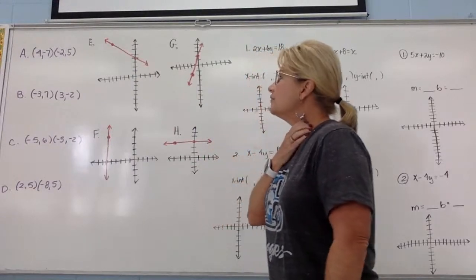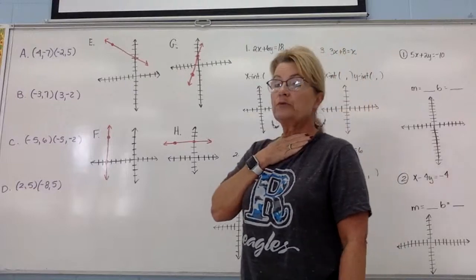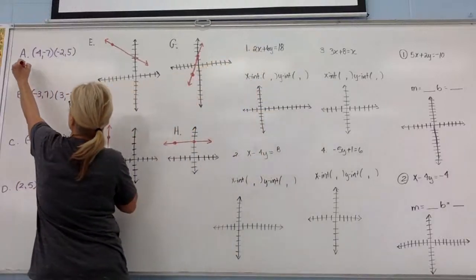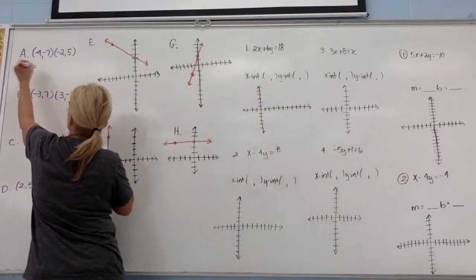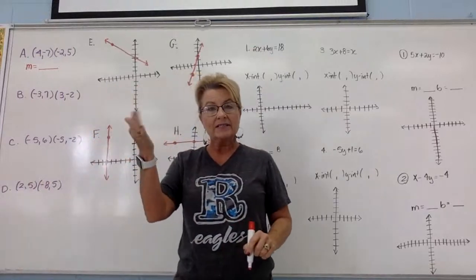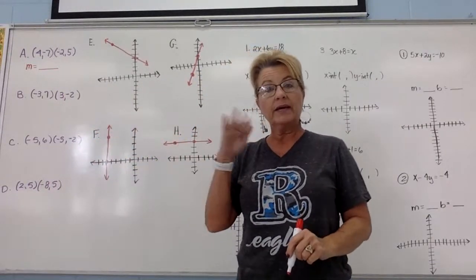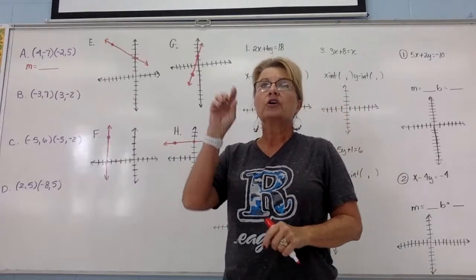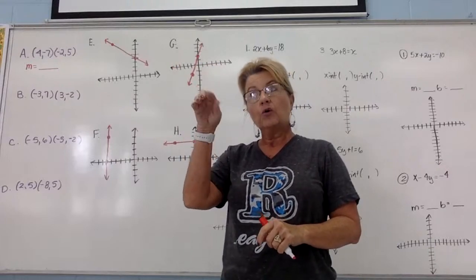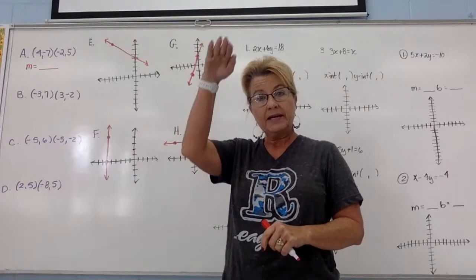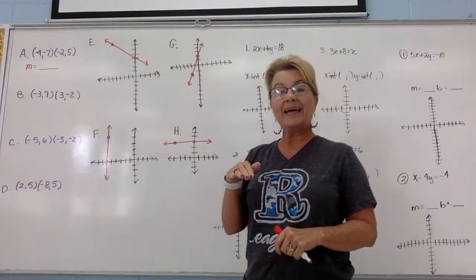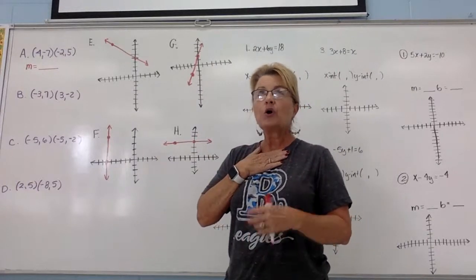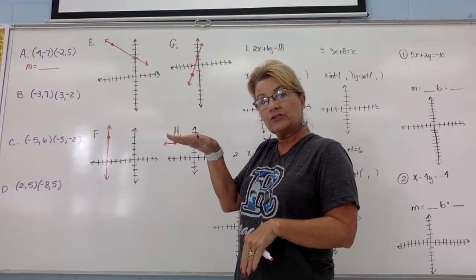The formula for slope uses the letter m. It is y-sub-2 minus y-sub-1 over x-sub-2 minus x-sub-1. Your y's, which represent vertical movement in the coordinate plane, always go on top, and your x's, which make the horizontal run, go on the bottom — just like going upstairs where your foot rises first and then steps horizontally across.